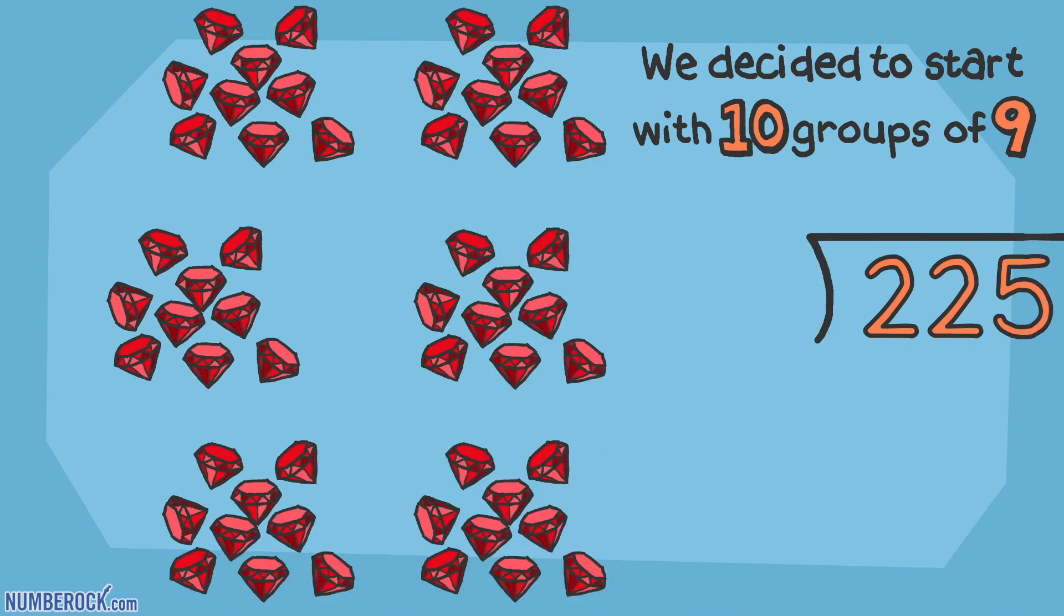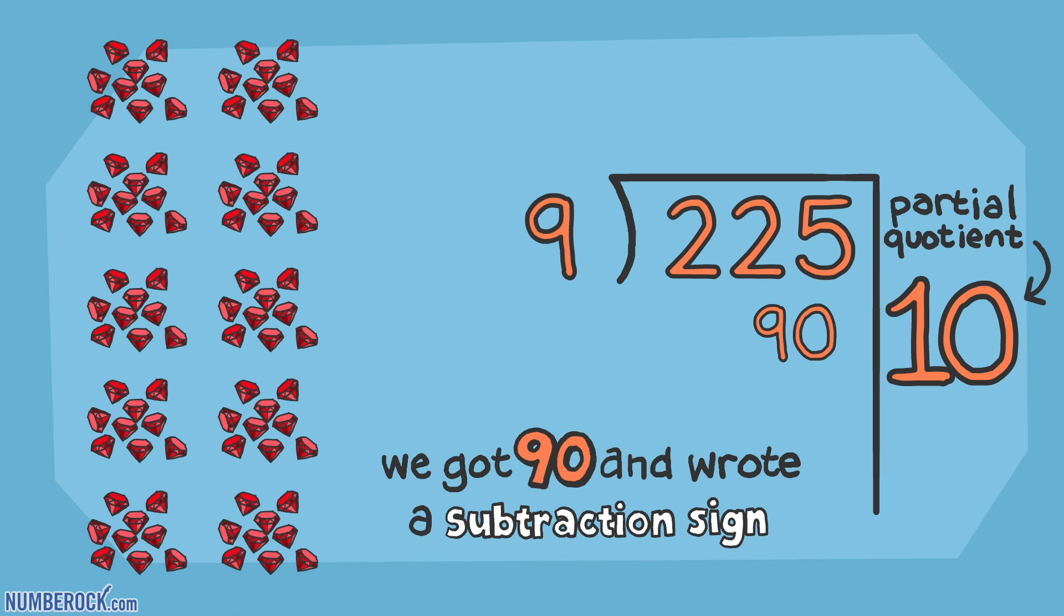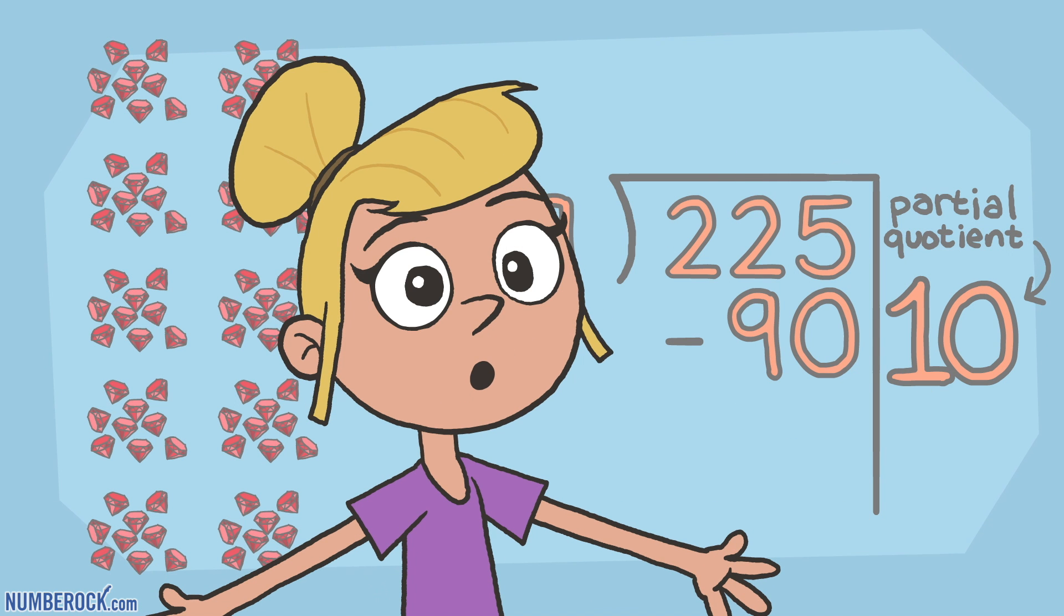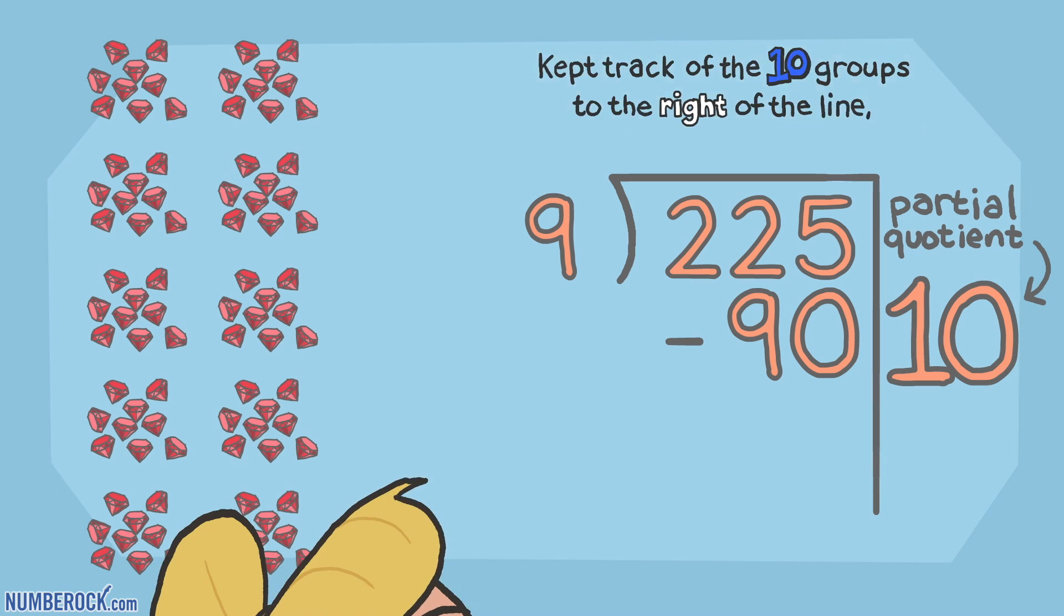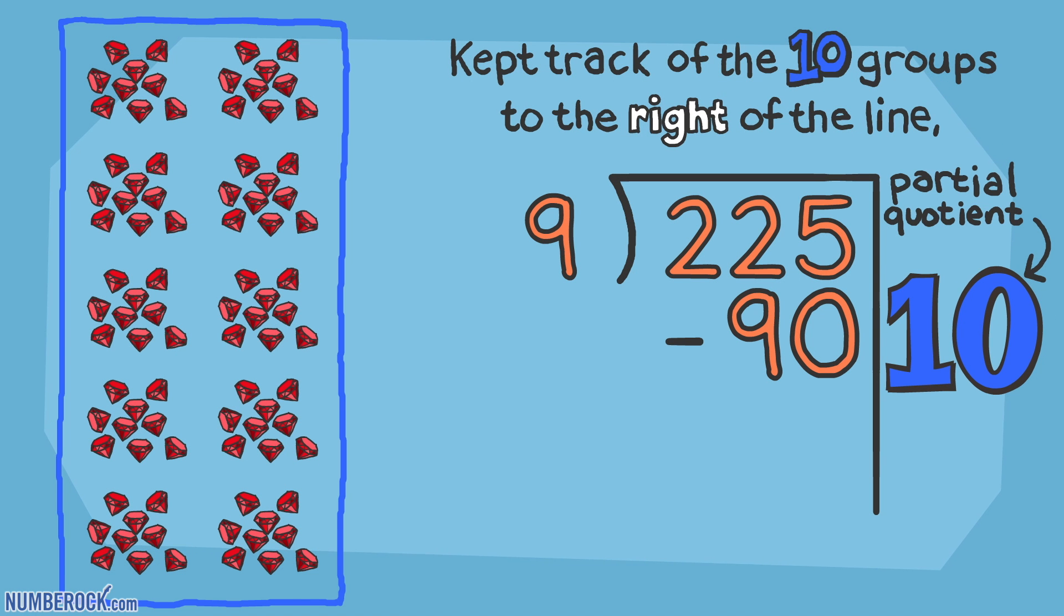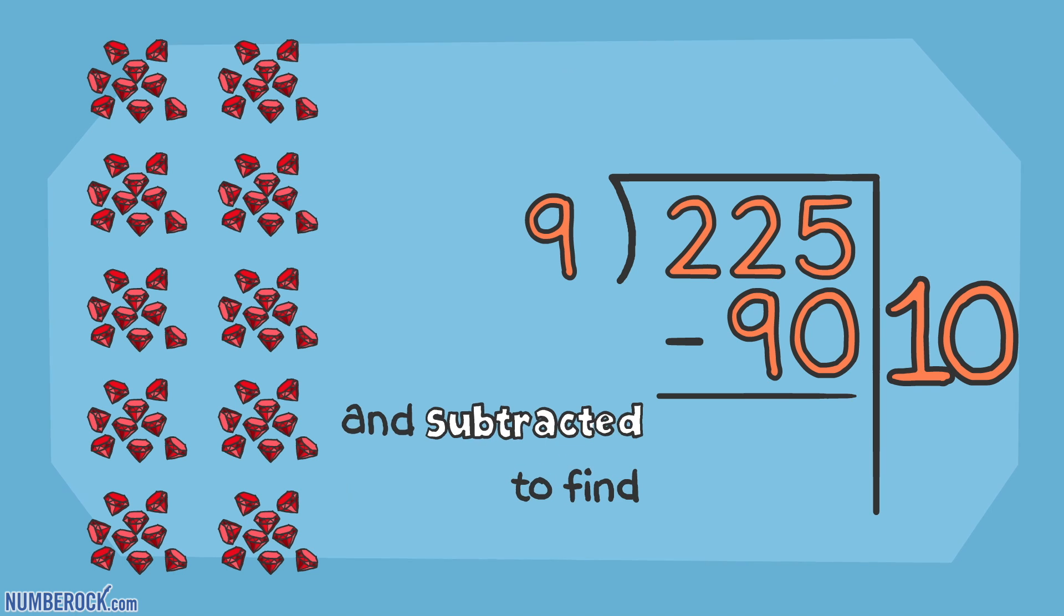We decided to start with 10 groups of 9. We got 90 and wrote a subtraction sign. Subtract off the 10 groups to the right of the line and subtract to find 135.